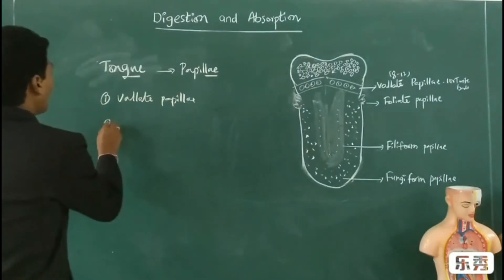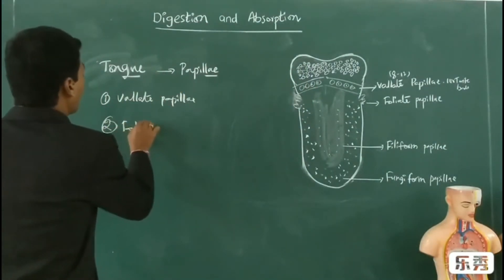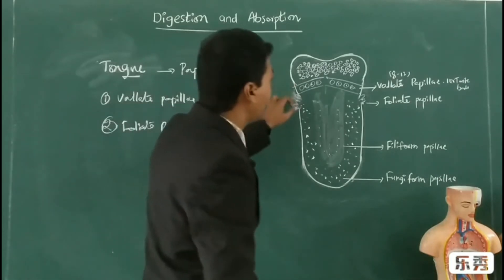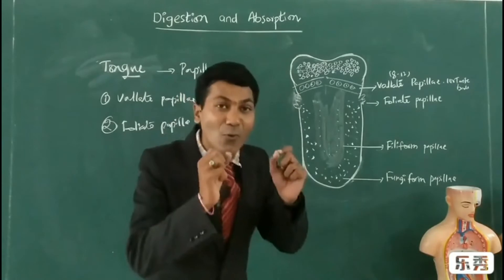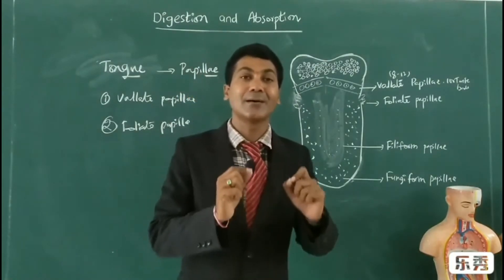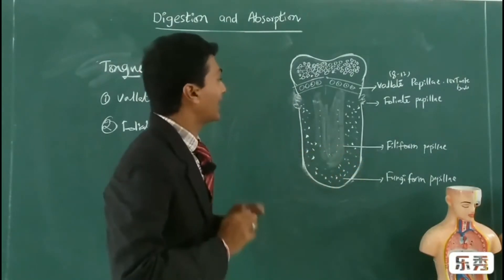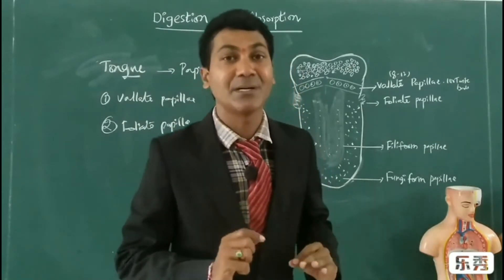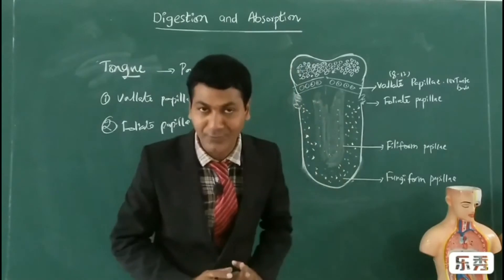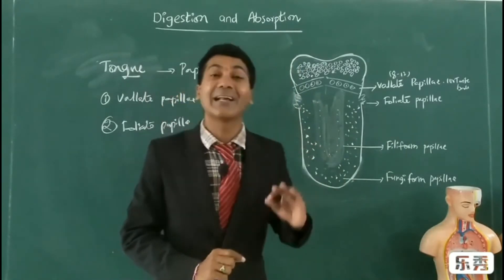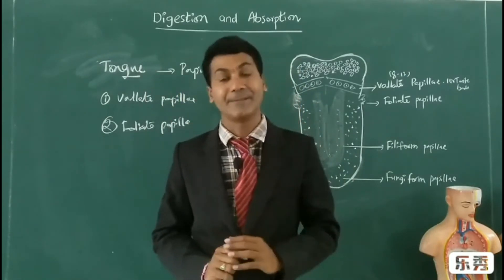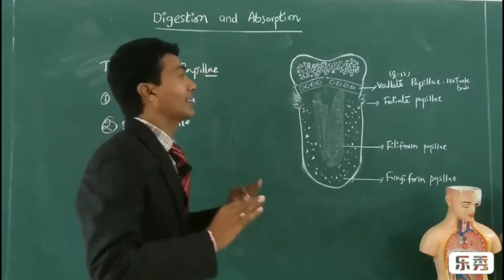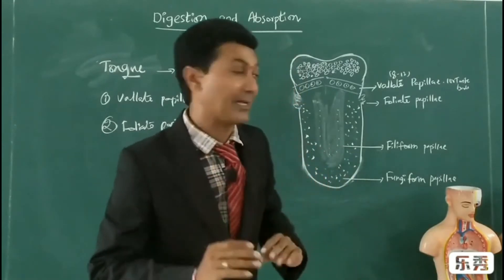The second one, foliate papillae. Foliate papillae are immediately next to the vallate papillae, which are frill-like or leaf-like in structure. My dear students, I want to tell you these are not having any taste buds, so they are not helping in the detection of taste, but they have tactile receptors and they help in detecting texture. So in human beings, foliate papillae do not help in the detection of taste.